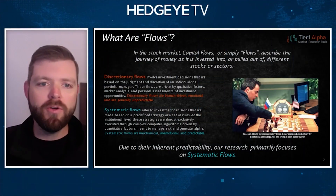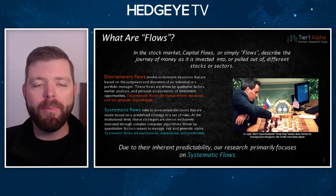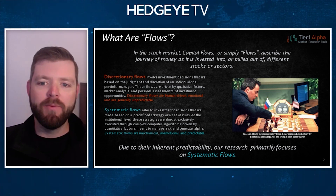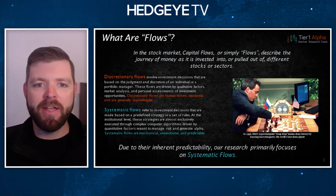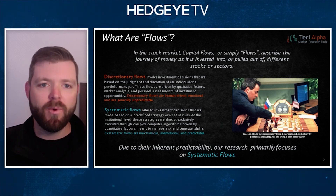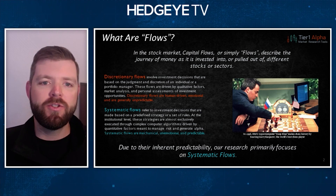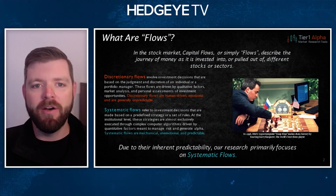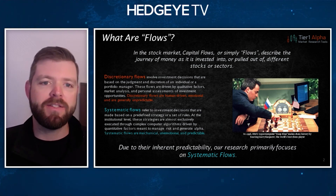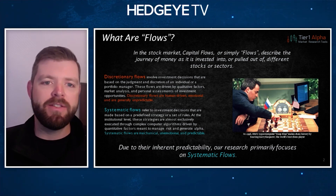Let's start talking about what flows actually mean. Flows are basically just describing the buying and selling that's happening within the stock market. You can think of capital flows as every time you buy a stock, you're injecting money into the market, and every time you sell one, you're pulling it out. There are generally two types of flows driving equity markets: discretionary flows and systematic flows.